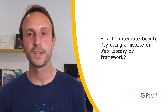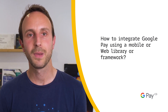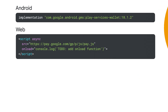How to integrate Google Pay using a mobile or web library or framework? We want to provide you with the right set of tools to help you integrate Google Pay in the most familiar and convenient way for you and your team. If you are using generic stacks for your applications, like JavaScript on the web and Java or Kotlin on Android, you can use our vanilla libraries to get started on both platforms. Take a look at g.co/pay/api to learn more.